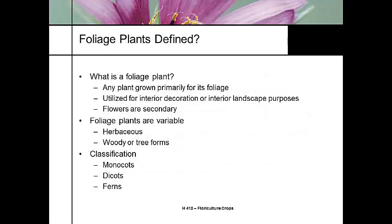We have a lot of different types of things we typically call foliage plants. What is a foliage plant? A foliage plant is any plant that we're growing for pretty leaves. We want them to look good and look nice. We're using them for interior decoration and interior landscape purposes, and most of the time flowers are secondary. We're looking at herbaceous plants, woody plants, tree forms. They can be monocots, dicots, and they can be ferns.